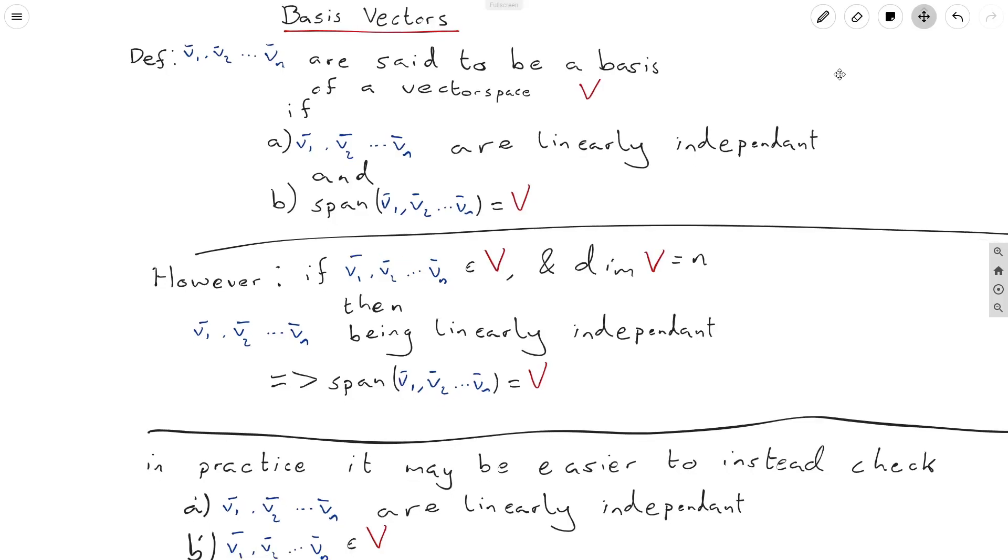And that's to make the observation that if v1, v2, ..., vn are in our vector space V, and the dimension of V is equal to n, that is the number of vectors in our collection, if that's equal to the dimension of our vector space, then v1 to vn being linearly independent implies that the span of v1 up to vn is equal to V.